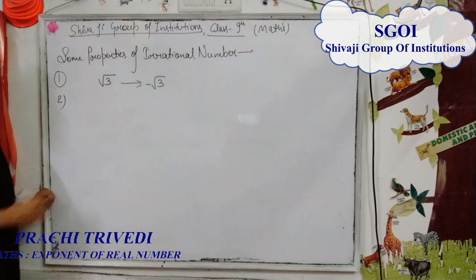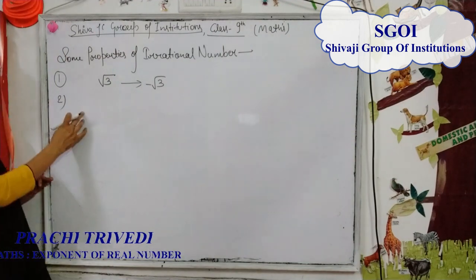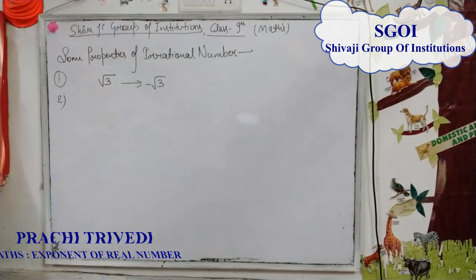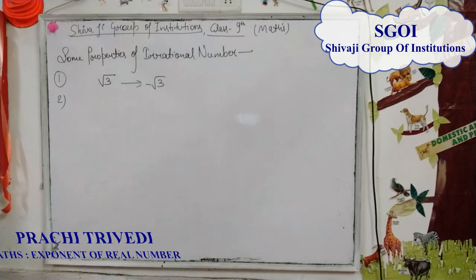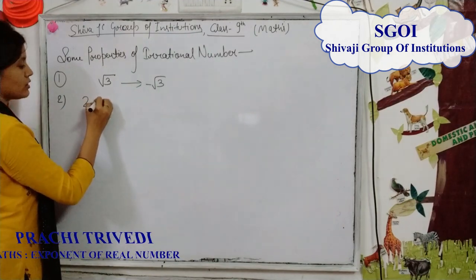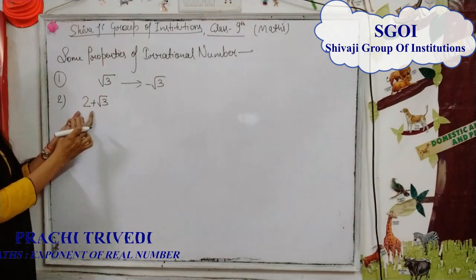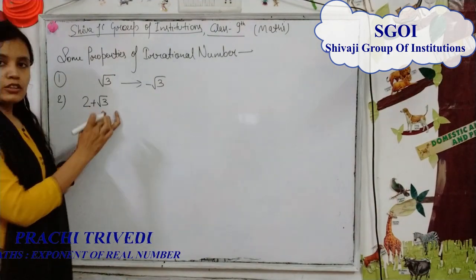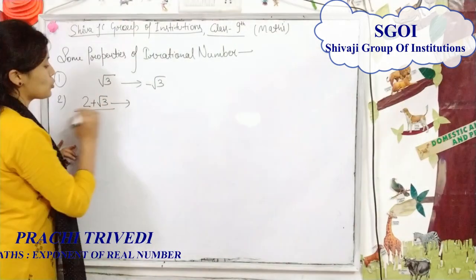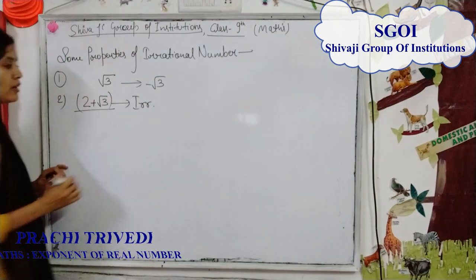The second property is: the sum of a rational number and an irrational number is always an irrational number. For example, 2 plus root 3 — here 2 is a rational number and root 3 is an irrational number, so their sum 2 plus root 3 is an irrational number.